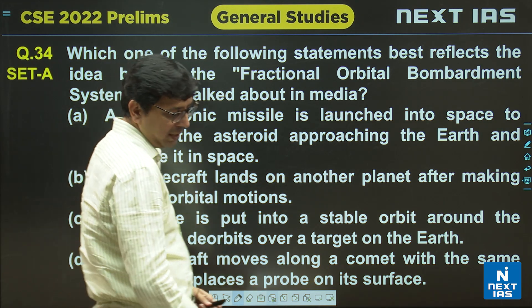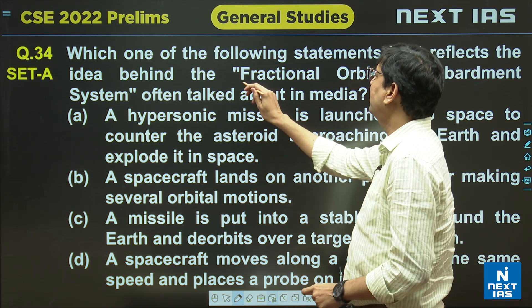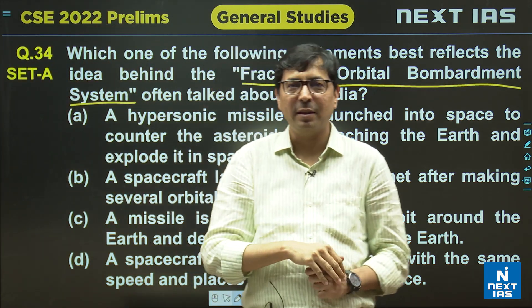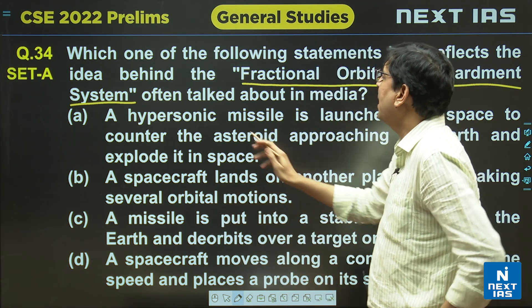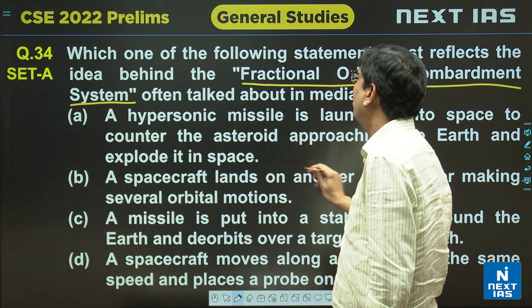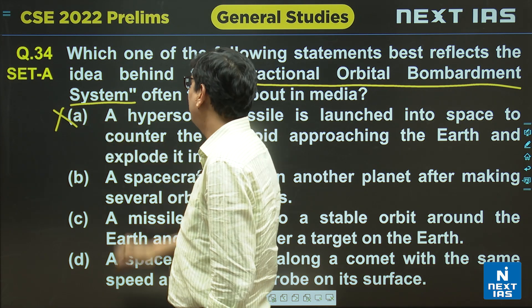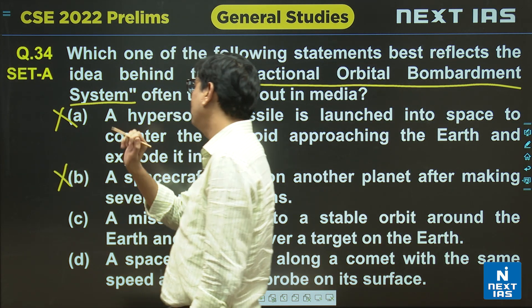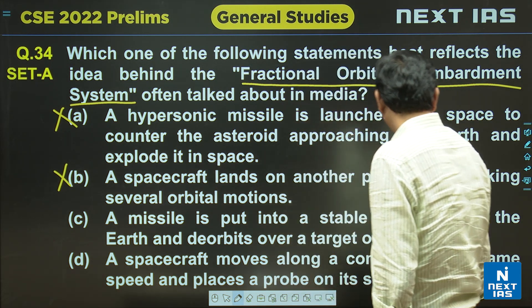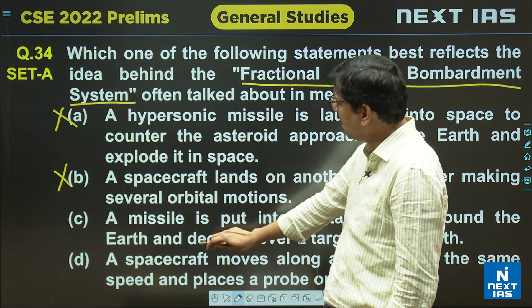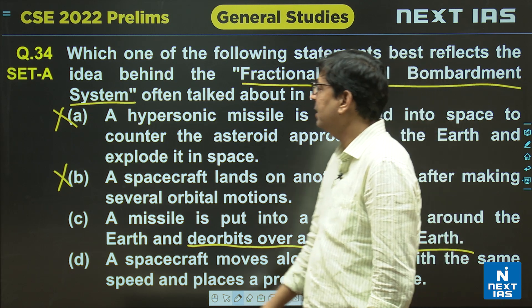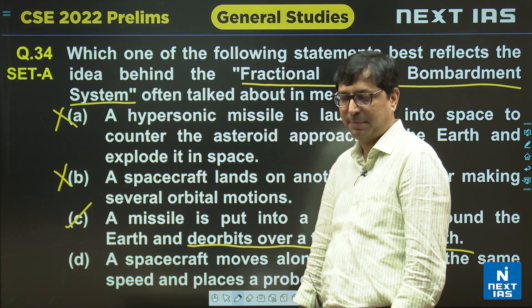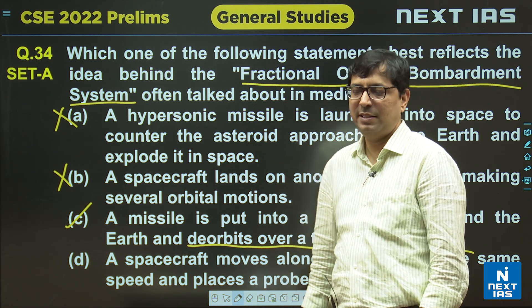Question 34 is about the Fractional Orbital Bombardment System. Breaking down the answer options: a hypersonic missile launched to counter an asteroid — no, not bombardment. A spacecraft landing on another planet — no, also not bombardment. A missile put into a stable orbit around the earth and de-orbited over a target on earth — yes, that's correct. The answer for question 34 is C.